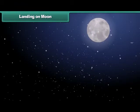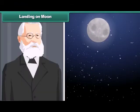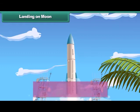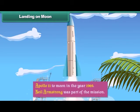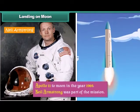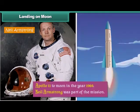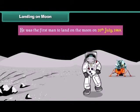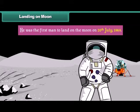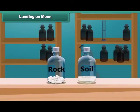Even though life is impossible on the Moon, it continues to fascinate scientists who wanted to learn more about it. Therefore, they sent a mission called Apollo 11 to the Moon in the year 1969. Neil Armstrong was part of the mission and was the first man to land on the Moon on 20th July 1969. He performed various experiments on the Moon and brought back samples of soil and rock.